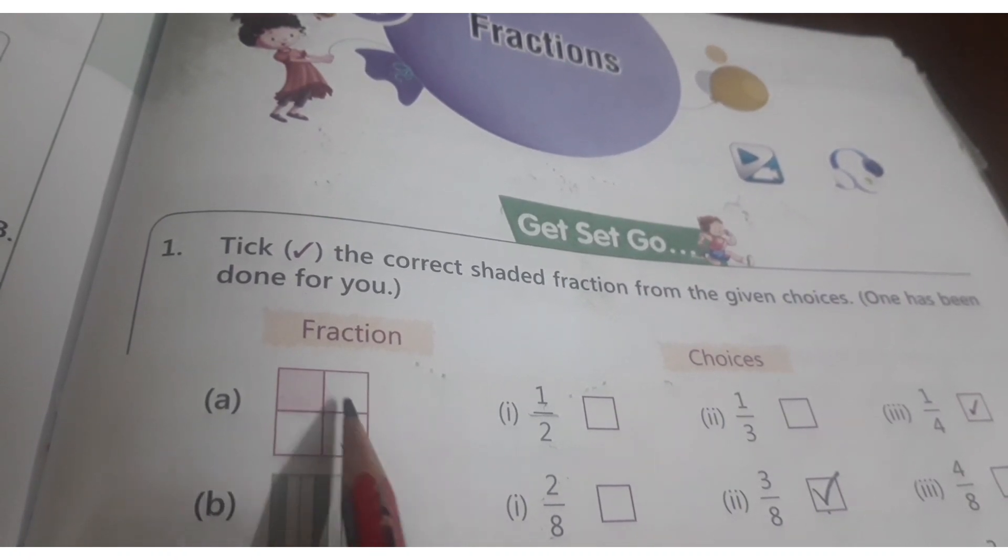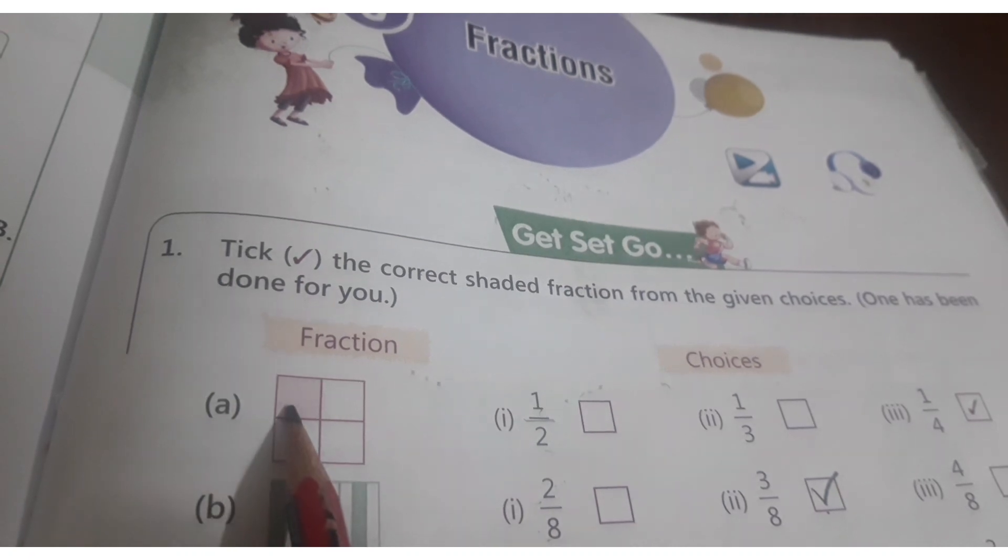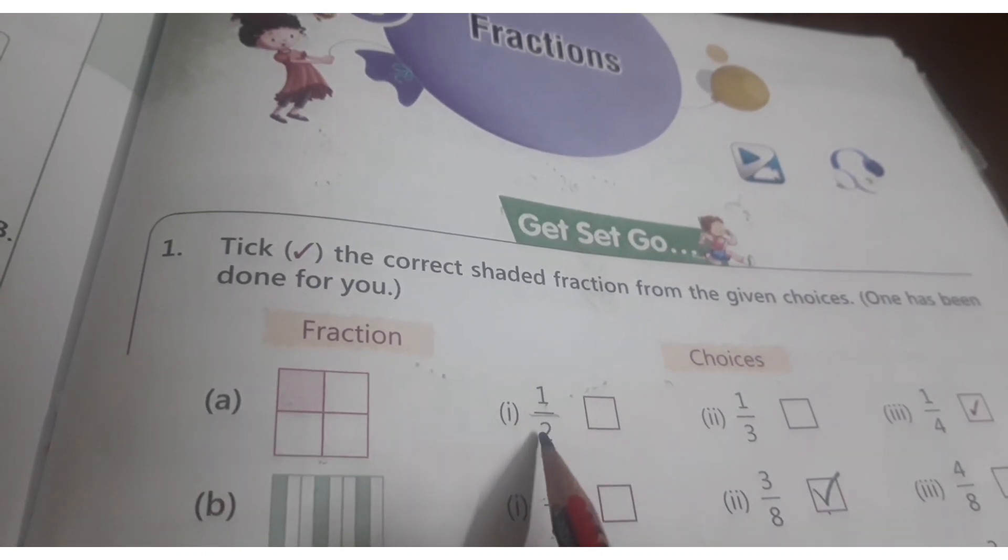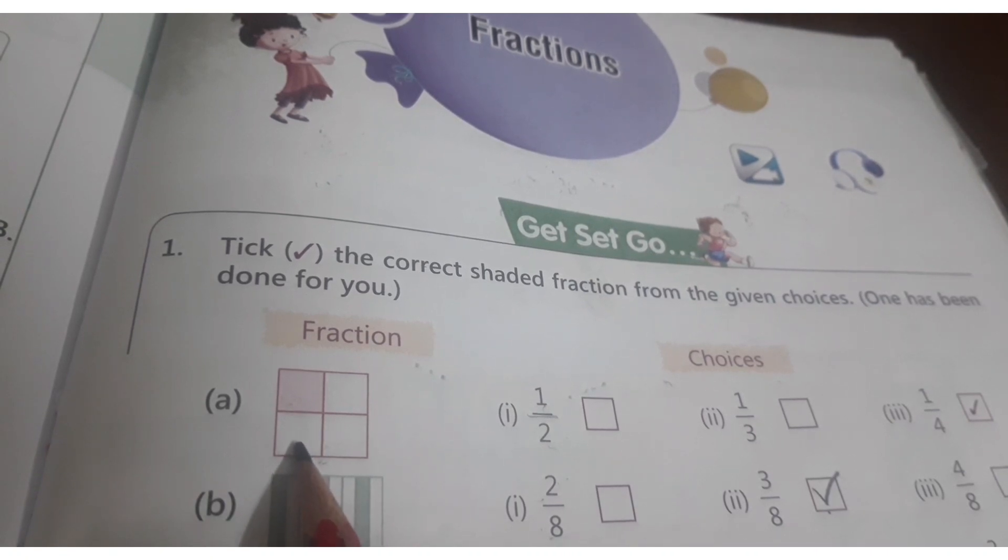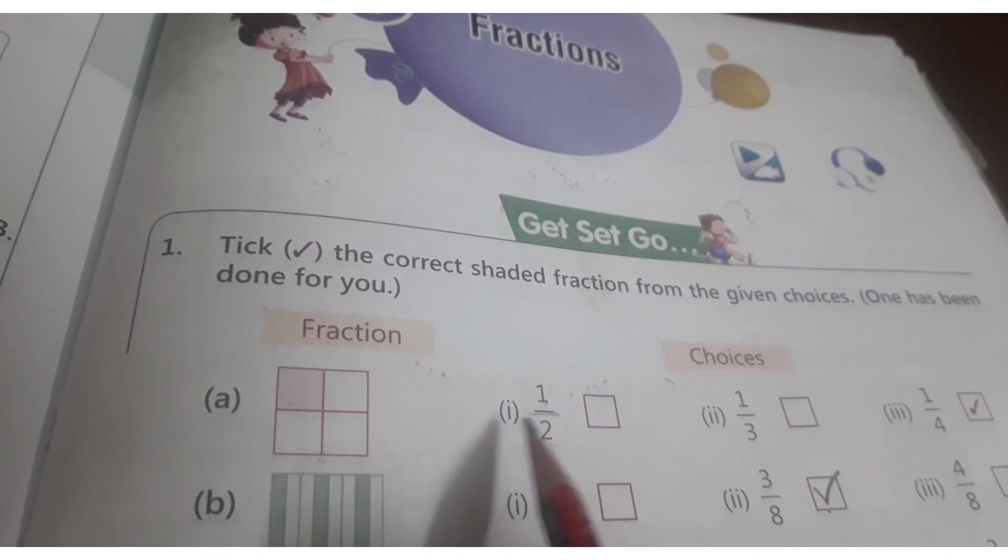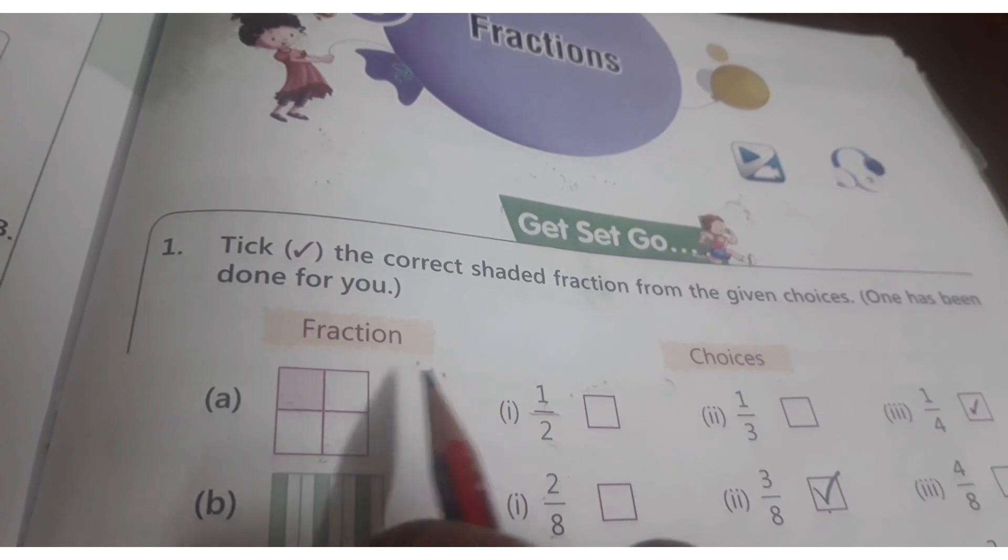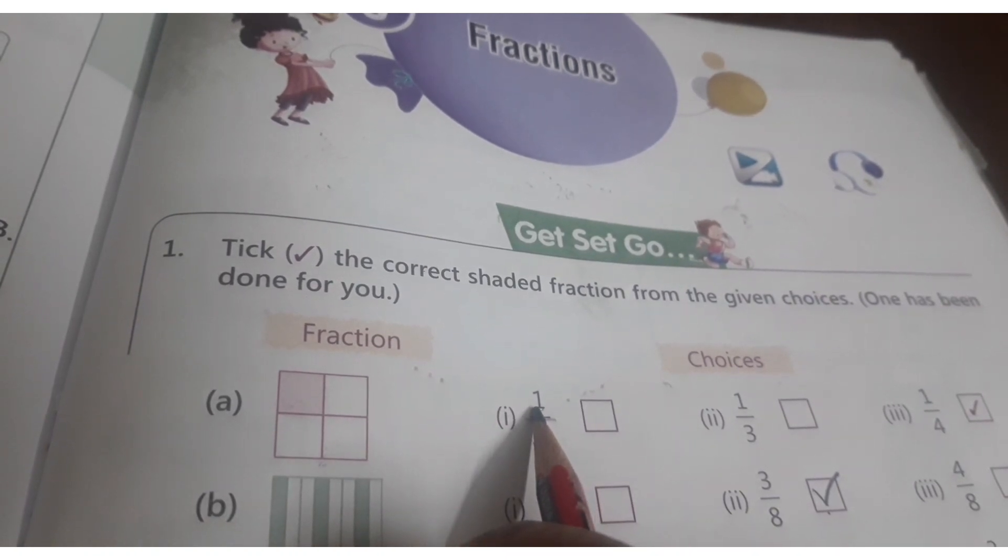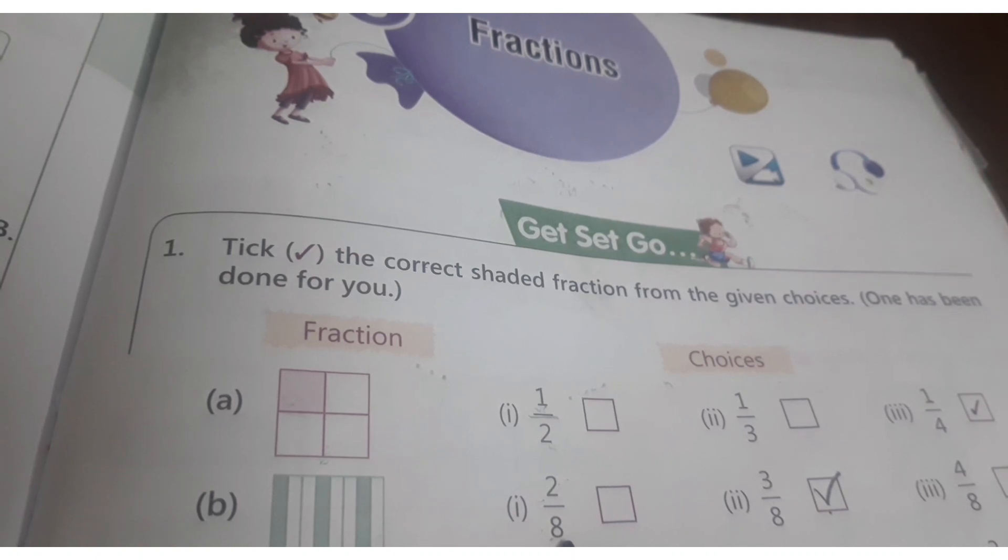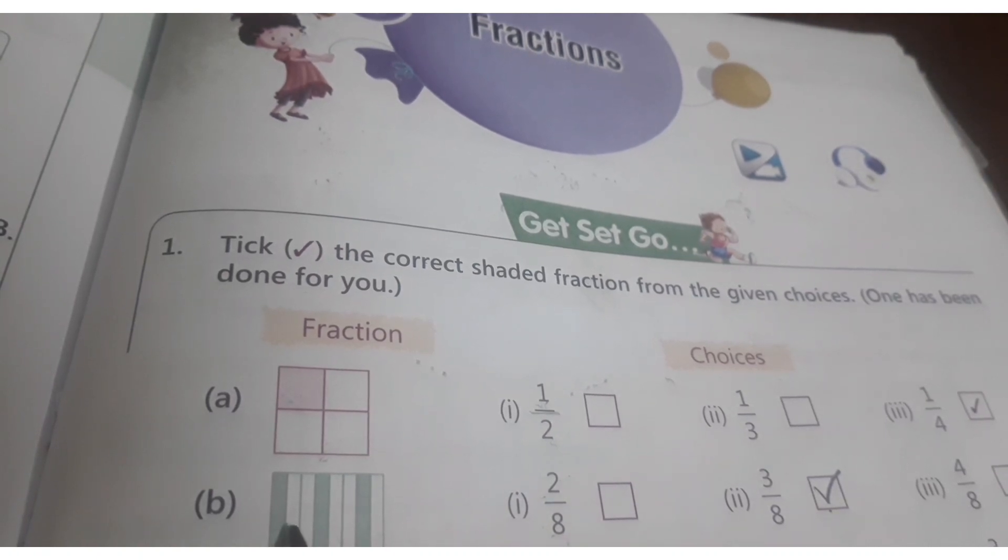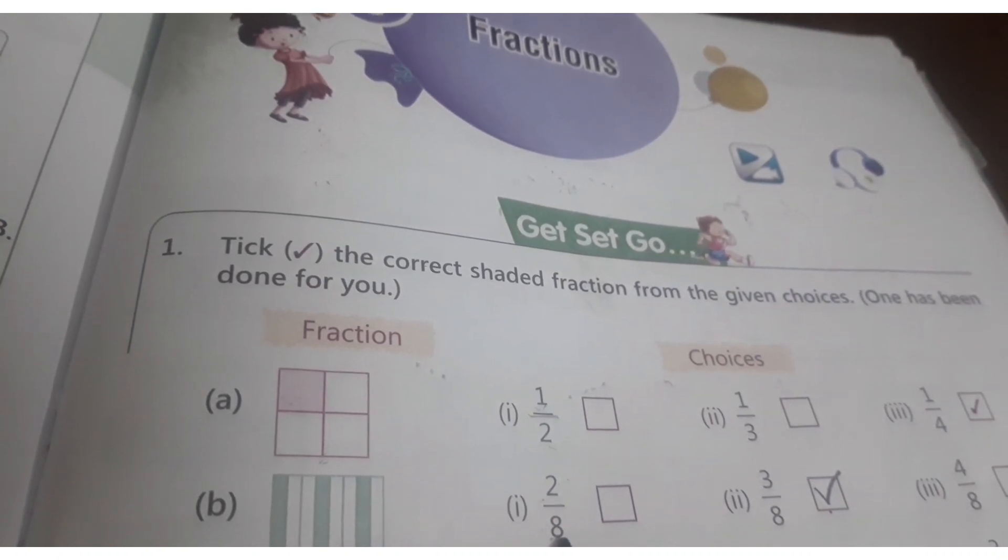Denominator is always how many equal parts are there, how many total parts are there. Out of total, how many numbers are colored. We have to give more preference to denominator, how many divides, how many times divided boxes, that we have to write.